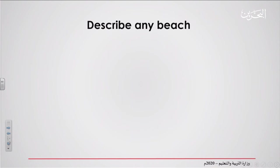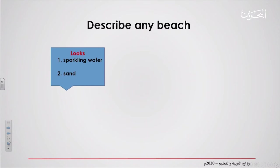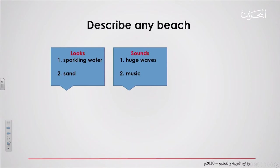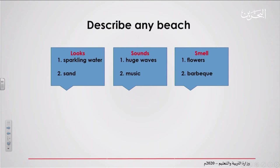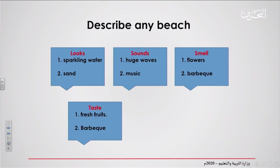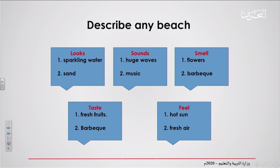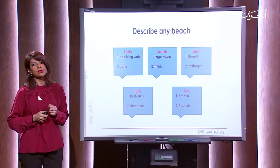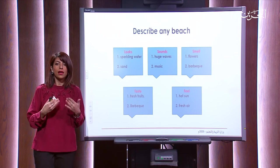Now we have an example for describing a beach or island. For looks, you can see sparkling water and sand. For sounds, you can hear huge waves or music. For smells, you can smell flowers or barbecue. For taste, you could eat fresh fruits and describe their taste, as well as the barbecue. For feels, since you're on the beach, you would feel the fresh air and the hot sun.